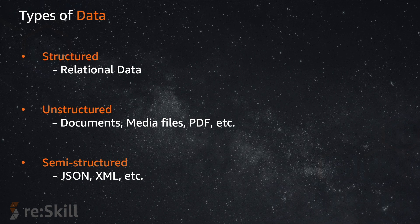Imagine if you put data in different silos in different places — how difficult it would be for the application to read from different sources. There should be a better mechanism, and this process should be taken care of in your data analysis or data processing pipeline. And then we have semi-structured data — typically a JSON file or XML file — which we use day in and day out. These are the three broad categories of data.